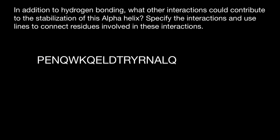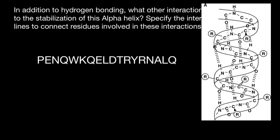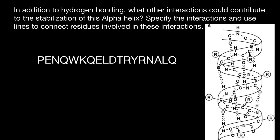Here's the sequence of this alpha helix. Each letter here stands for one amino acid. Specify the interactions and use lines to connect residues involved in these interactions. Here's the picture of the alpha helix, and as you see, we have hydrogen bonds here that go in a certain pattern. We are told that in addition to this hydrogen bonding that helps stabilize this alpha helix, we have also other internal forces that help stabilization of this polypeptide chain in the form of an alpha helix. What are these additional forces?